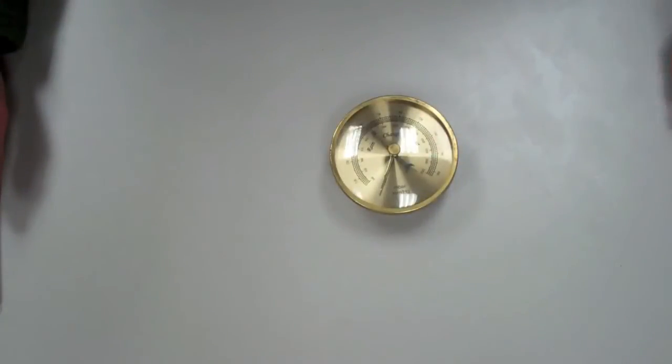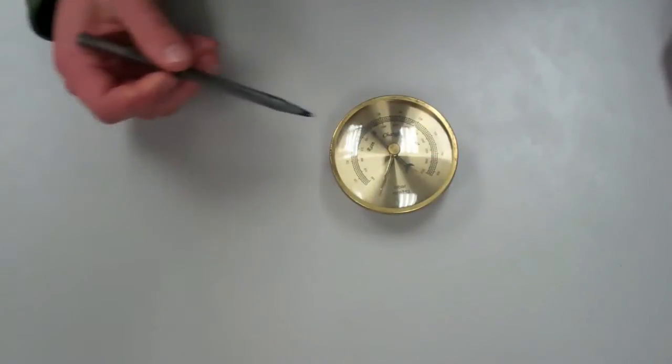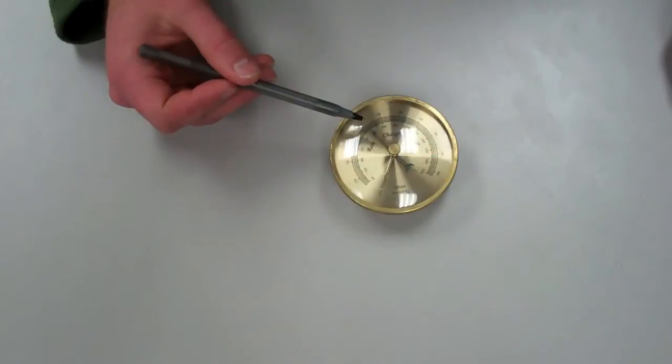This is the aneroid barometer you will be using for weather observations this semester. The black needle indicates the current atmospheric pressure. There are two scales in which to read this pressure.